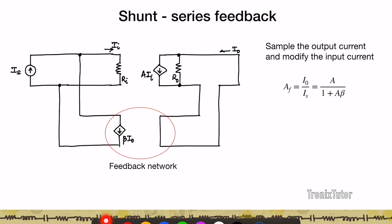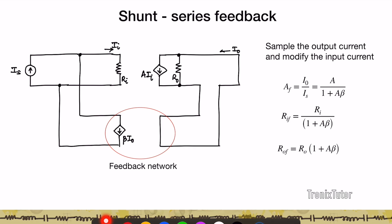Since this is a current amplifier, you want its input resistance to be as small as possible and its output resistance to be as high as possible. Because of feedback, the input resistance reduces from Ri to Ri divided by one plus A-beta, where one plus A-beta is the amount of feedback. Similarly, the output resistance increases and is given by R-naught multiplied by one plus A-beta. So the higher the feedback, the more the output looks like a current source.